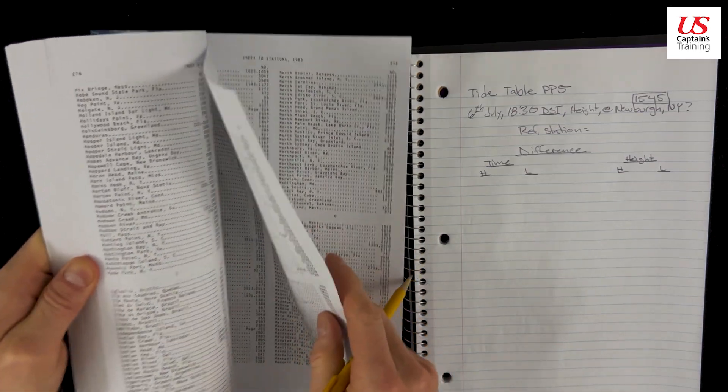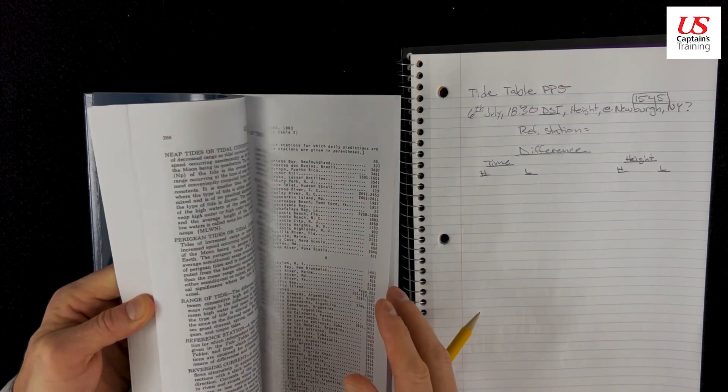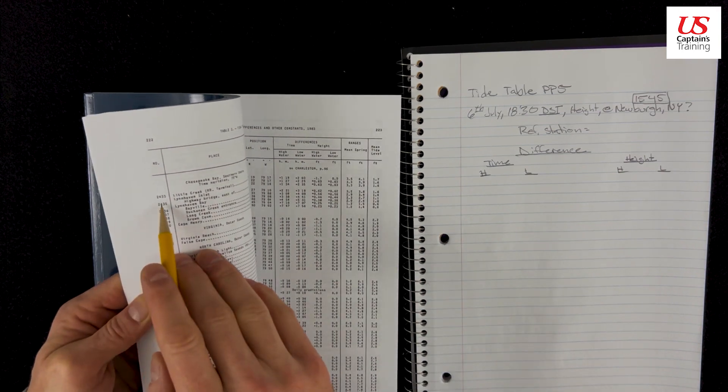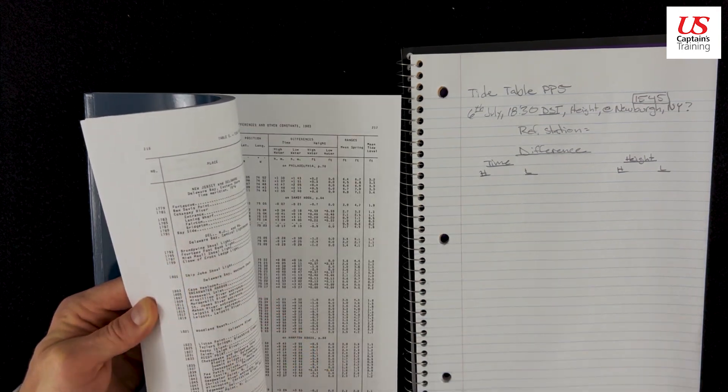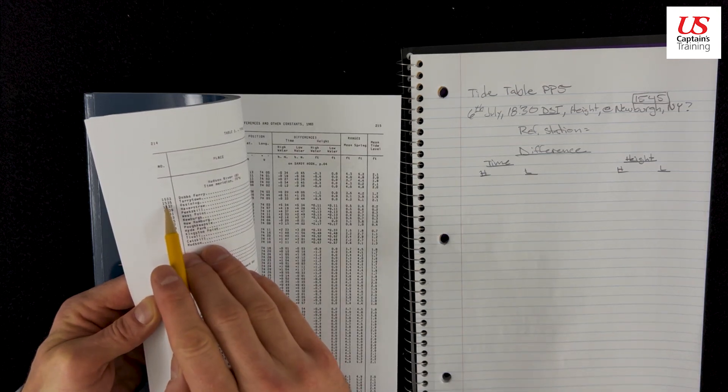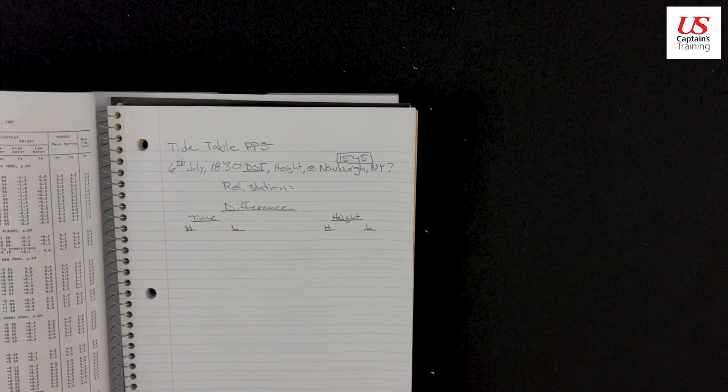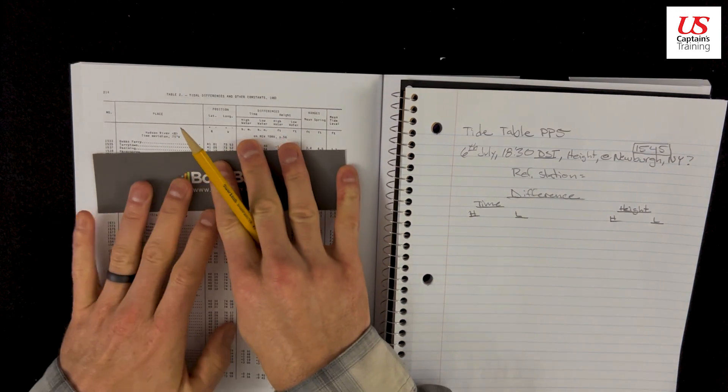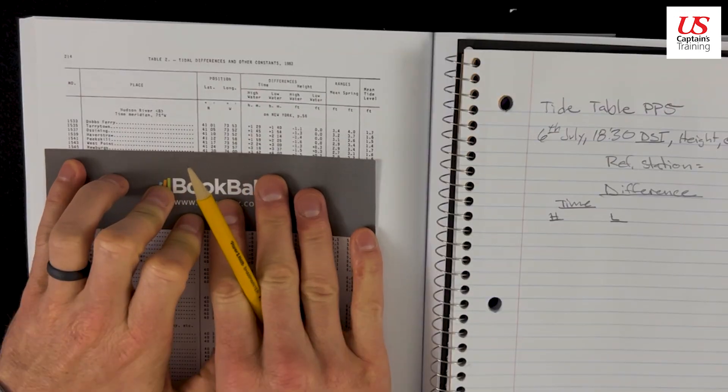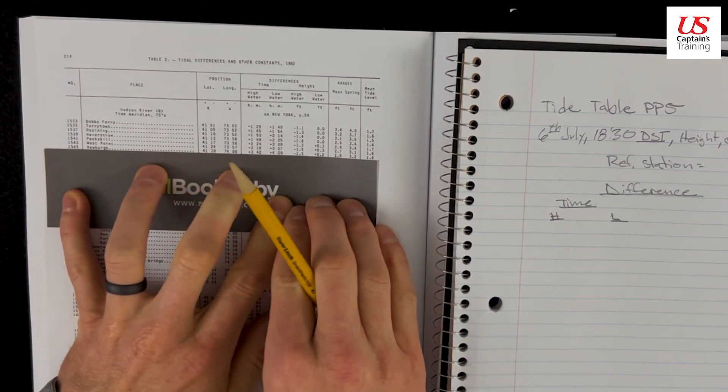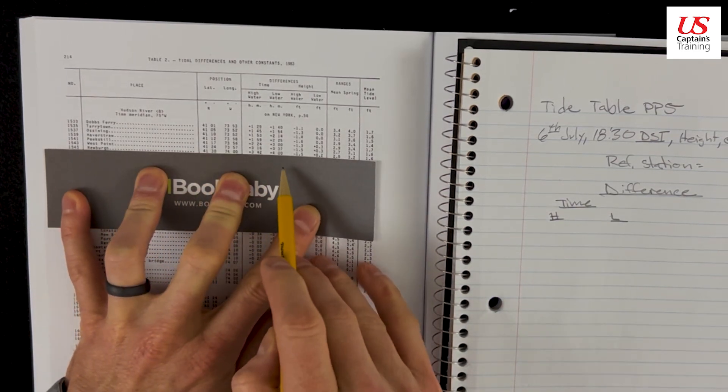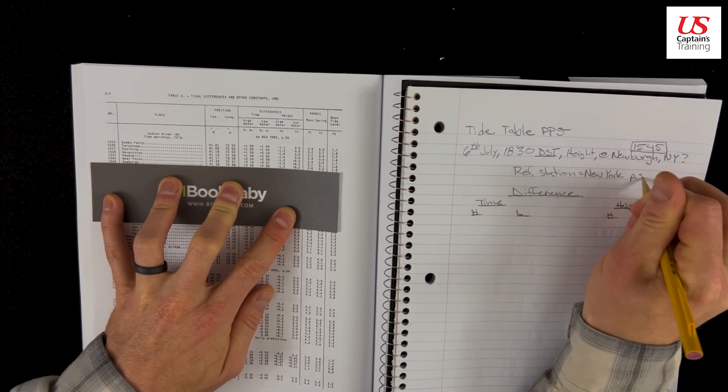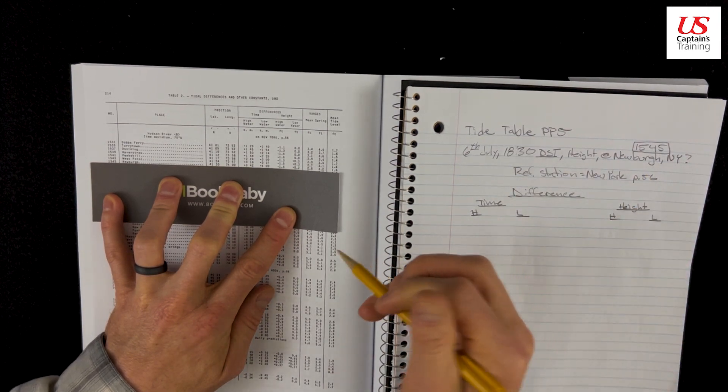Now let's go towards the beginning of the book, so towards the front of table twos. And once they appear, here's our numbers. 1545, 24, 19, 17, 1533. Okay, we're close. 1545, there we are. 1545, Newburgh. Our reference station on New York, page 56. New York, page 56. And now let's get our differences.